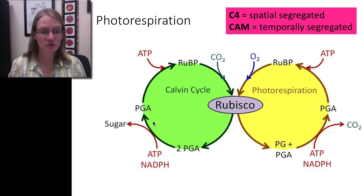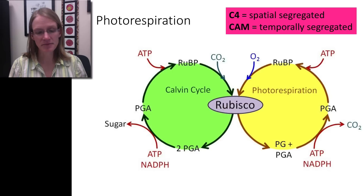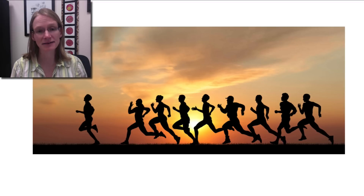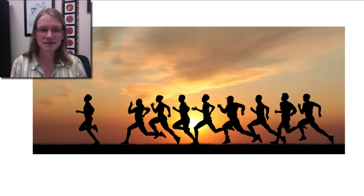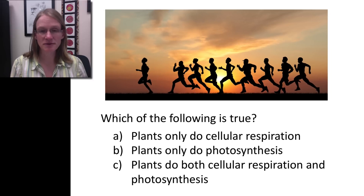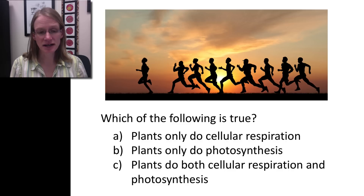Both C4 and CAM pathways focus on just the Calvin cycle and producing sugars. Now we can put these ideas together. We have photosynthesis and cellular respiration, and we clearly do cellular respiration — taking sugars, breaking them down, getting ATP as energy. Many students think plants only do photosynthesis, but that's not actually true. Plants are capable of doing, and primarily do, both cellular respiration and photosynthesis.